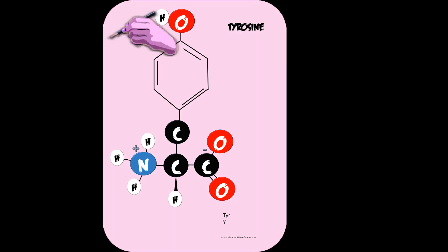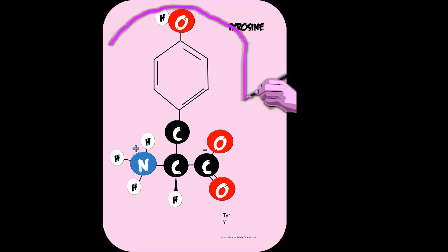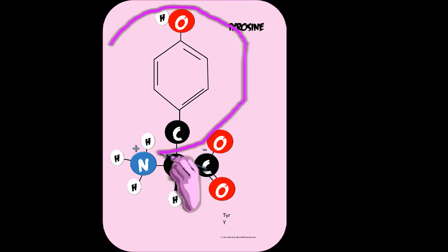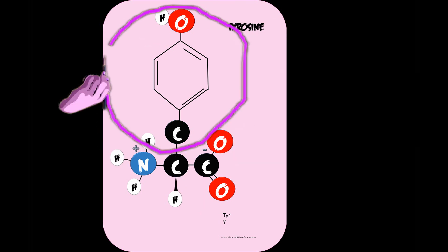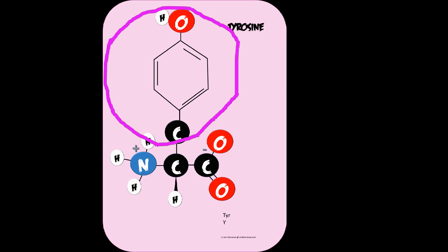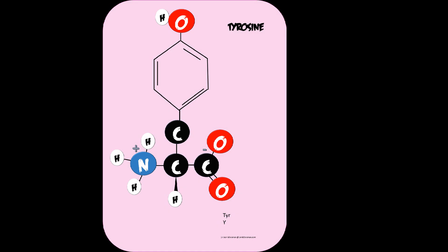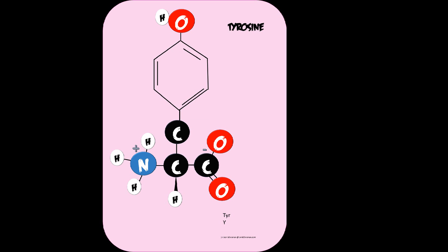Next is tyrosine. It's going to be very similar to phenylalanine, except the terminal hydrogen is replaced with a hydroxyl group. The OH group can participate in hydrogen bonds, whereas phenylalanine was in the hydrophobic group. Tyrosine is also an aromatic amino acid. With tyrosine, we have a CH2, the phenyl group, and an OH group on the terminal end.